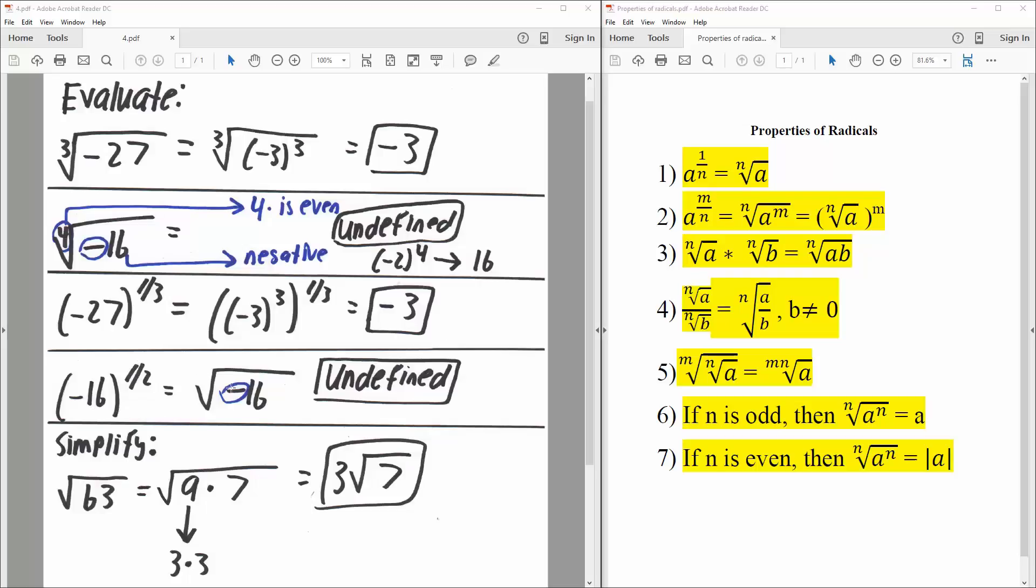Like for this problem, there's no way to get negative 16, so that's going to be undefined. The last one: we want to simplify the square root of 63.